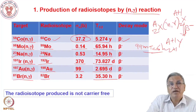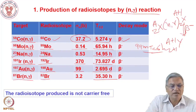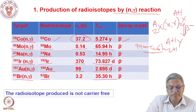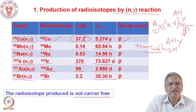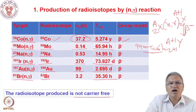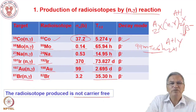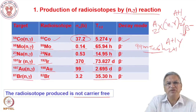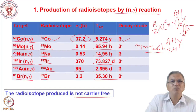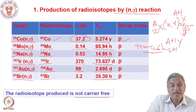An important aspect of N-gamma production is that the radioisotope produced is the same element as the target material. So the bulk of the material remains the same element, and therefore the product is not carrier-free — meaning not all atoms are of the radioisotope; the bulk remains the stable isotope. For example, if you irradiate 1 gram of cobalt, only a picogram, nanogram, or microgram of cobalt will be converted to cobalt-60; the bulk remains cobalt-59. This is the drawback of the N-gamma route: you do not get a carrier-free radioisotope.